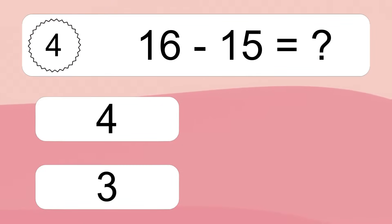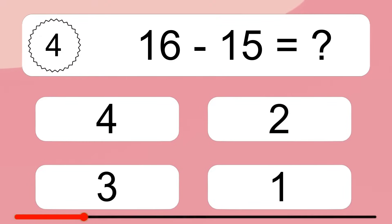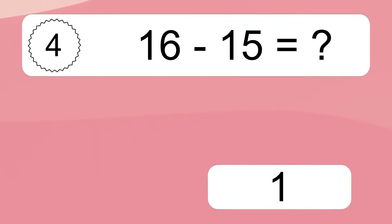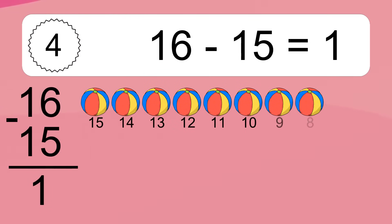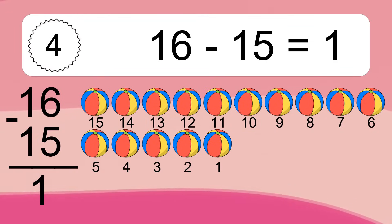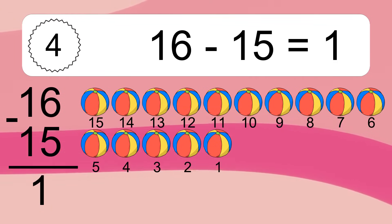16 minus 15 equals what? 16 minus 15 equals 1. Let's count it. 15, 14, 13, 12, 11, 10, 9, 8, 7, 6, 5, 4, 3, 2, 1.